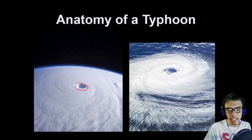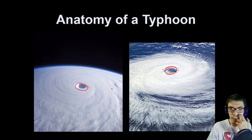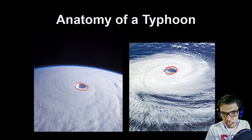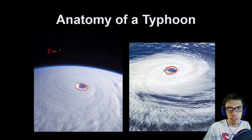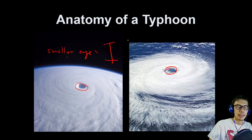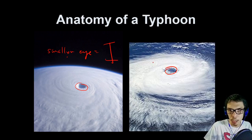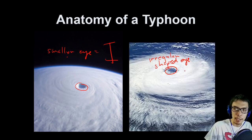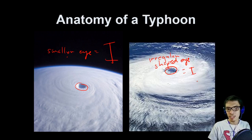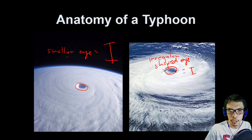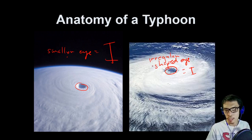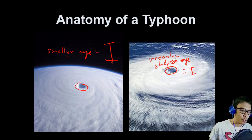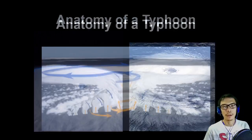In a typhoon, we now have a definite eye. The eye tells us the intensity of the typhoon. A smaller eye means a typhoon with higher intensity. A larger or irregular shaped eye means the typhoon is losing its intensity or is generally weakened. The eye itself tells you what intensity the typhoon has.